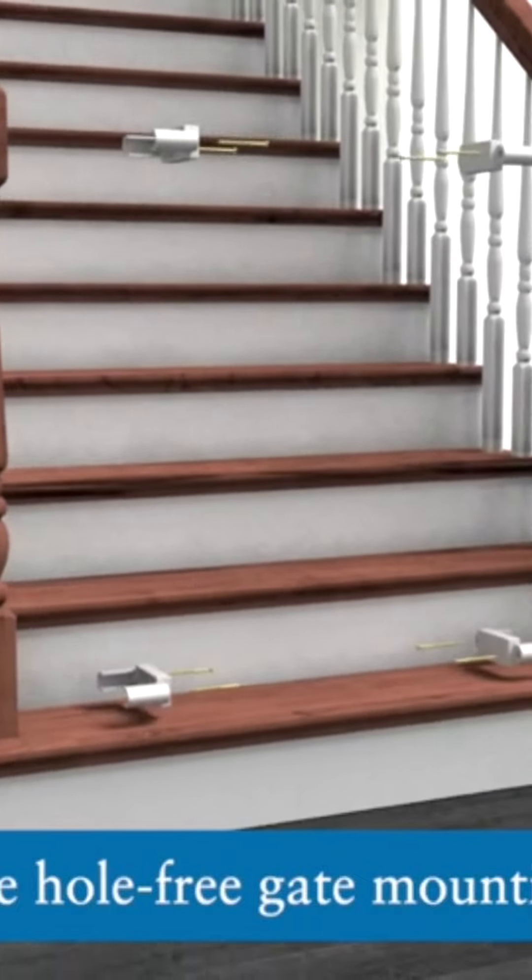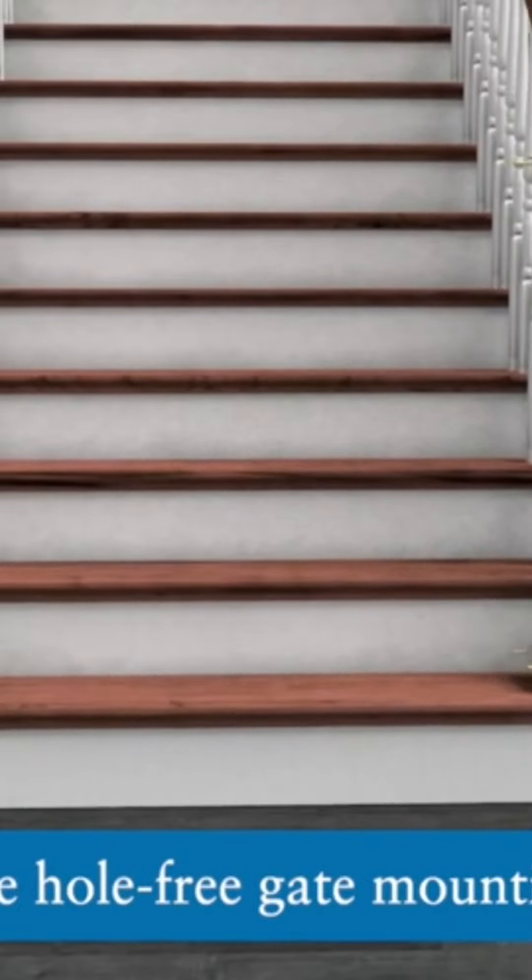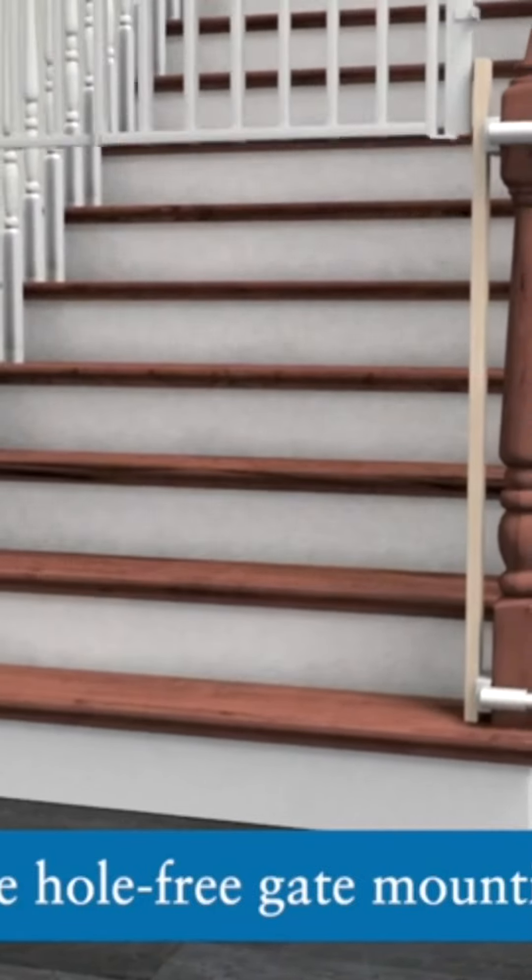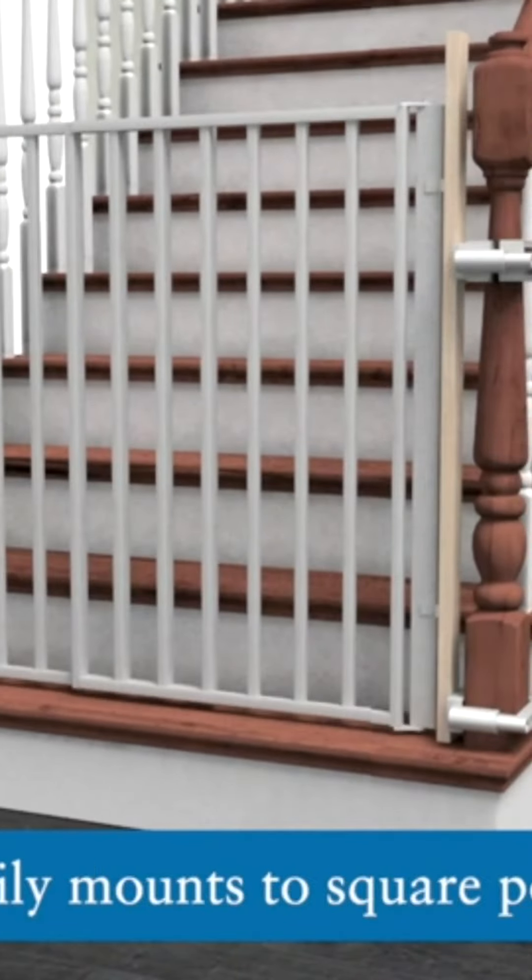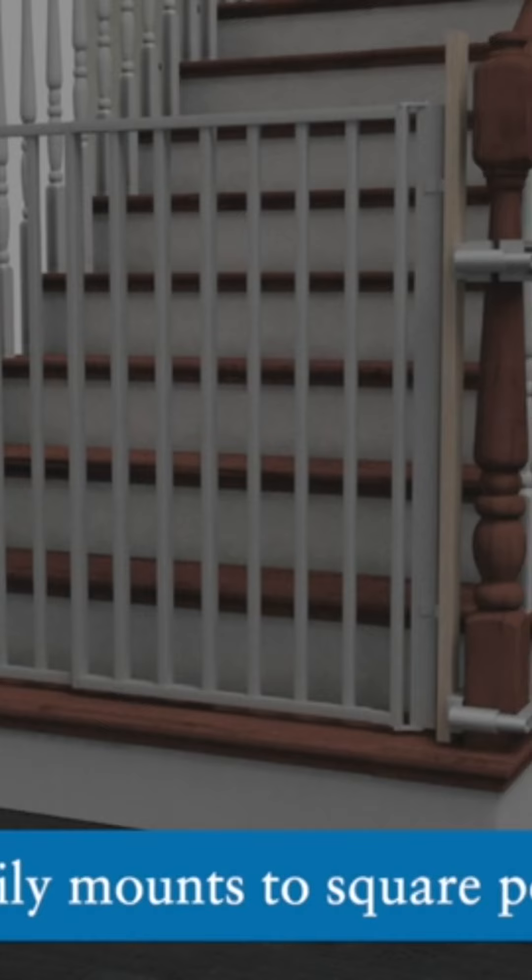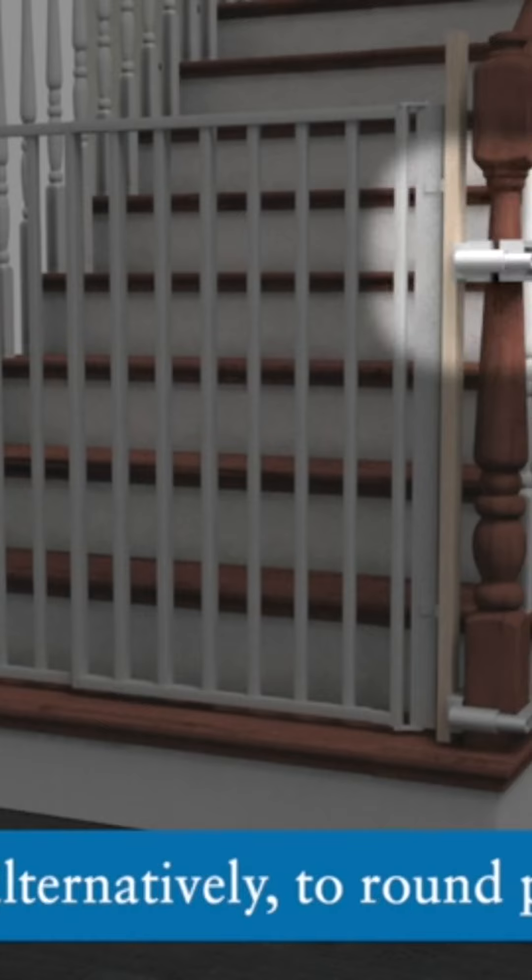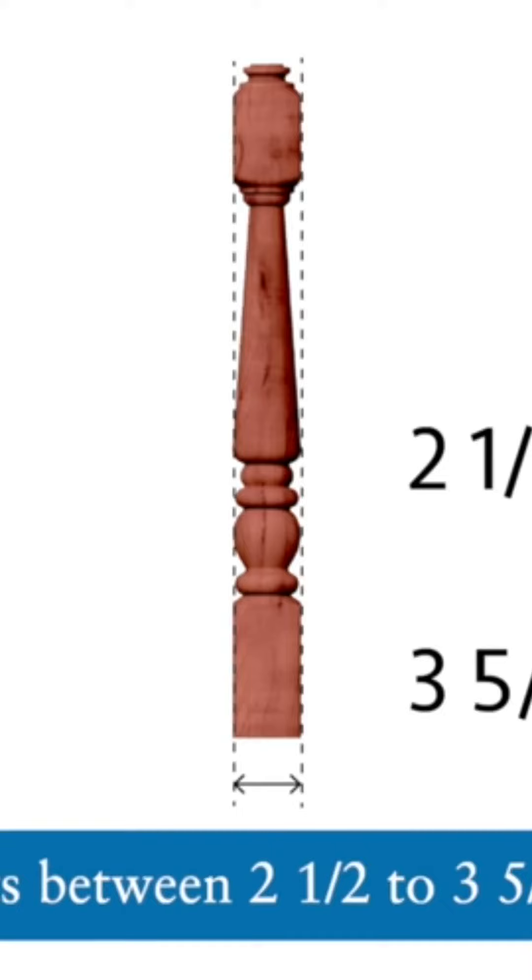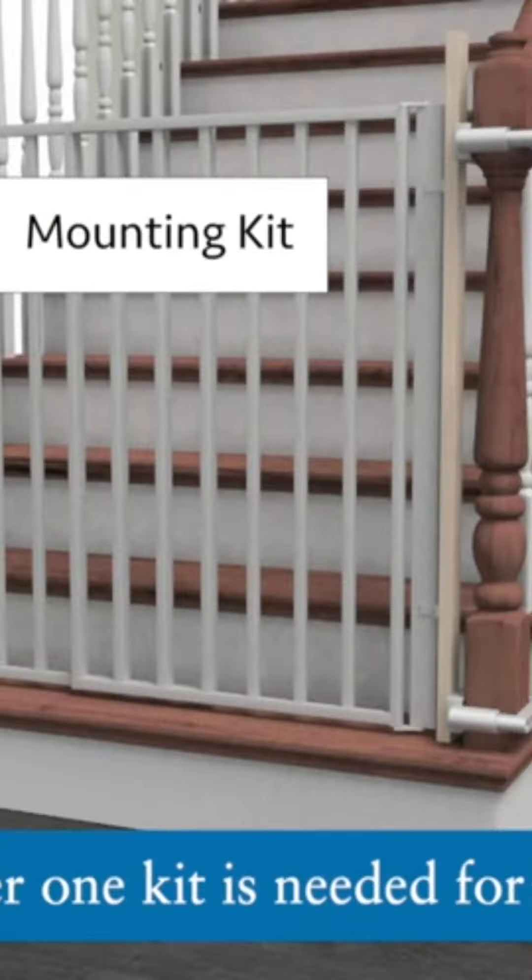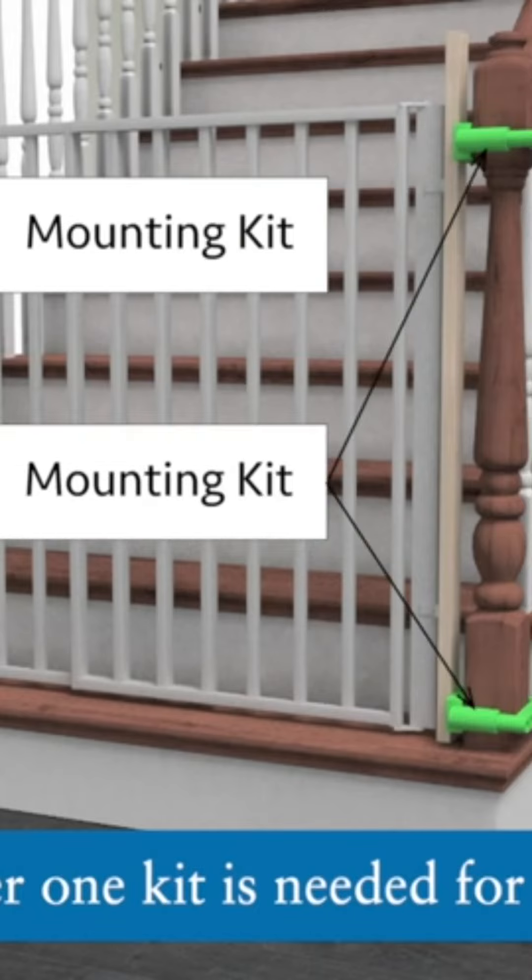Our Deluxe Hole-Free Gate Mounting Kit allows for easy and secure baby gate installation. It mounts either to square posts or alternatively to round posts, as long as the post is between 2 1/2 to 3 5/8 inches. Remember, one kit is needed for each post.